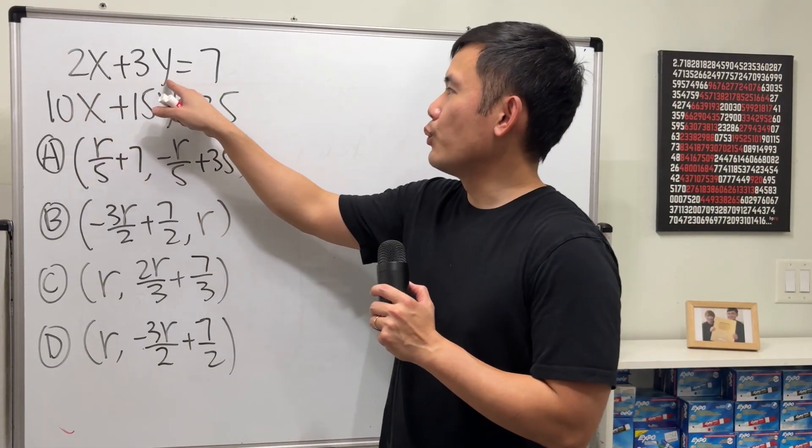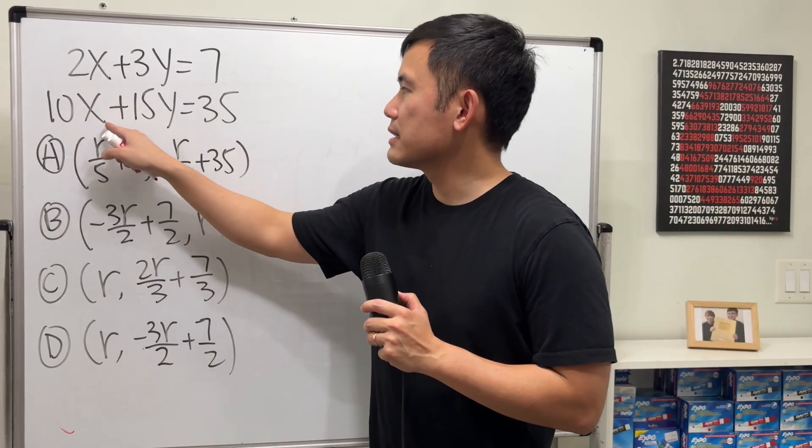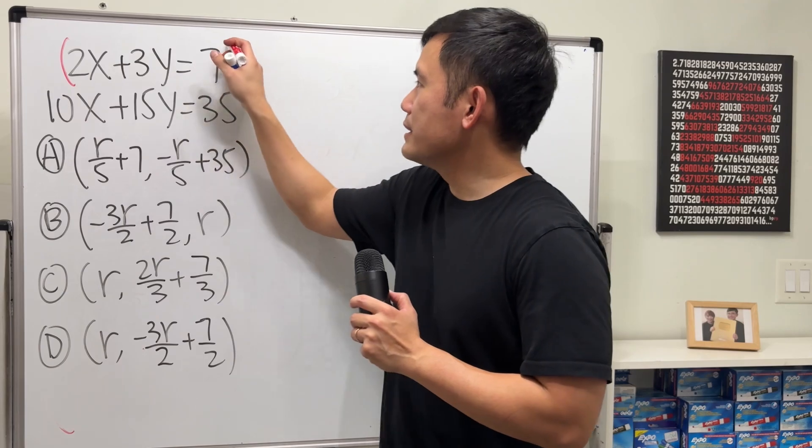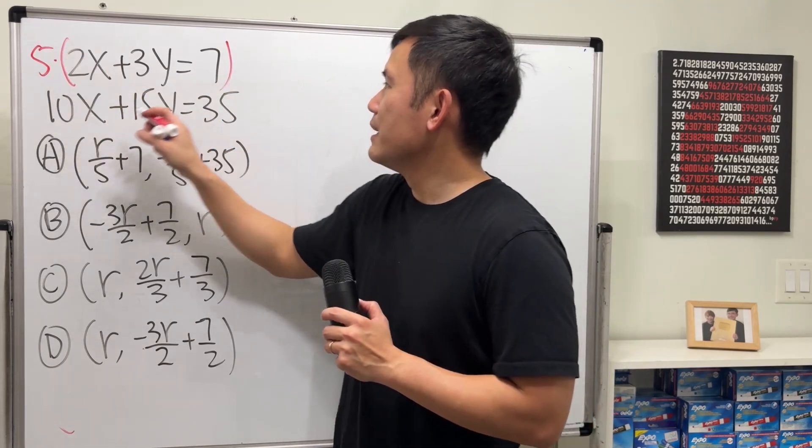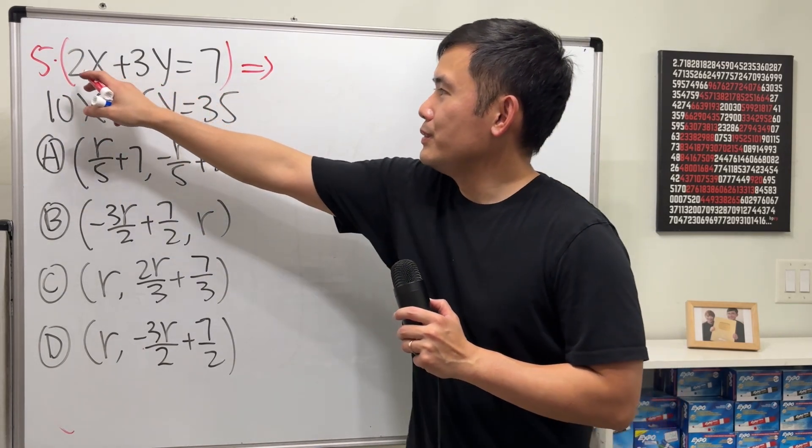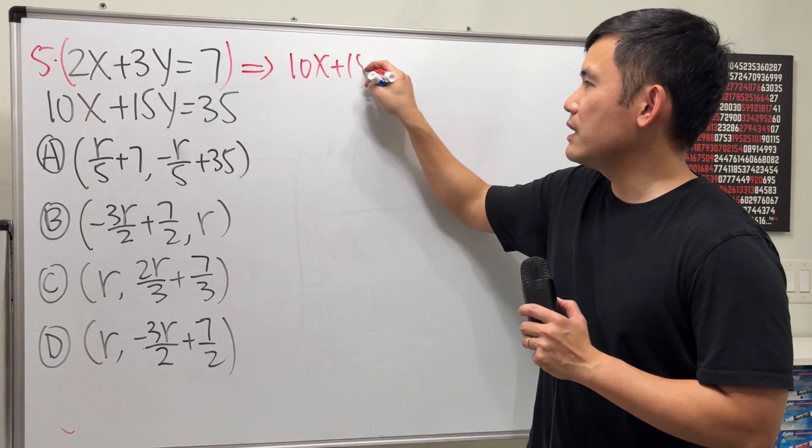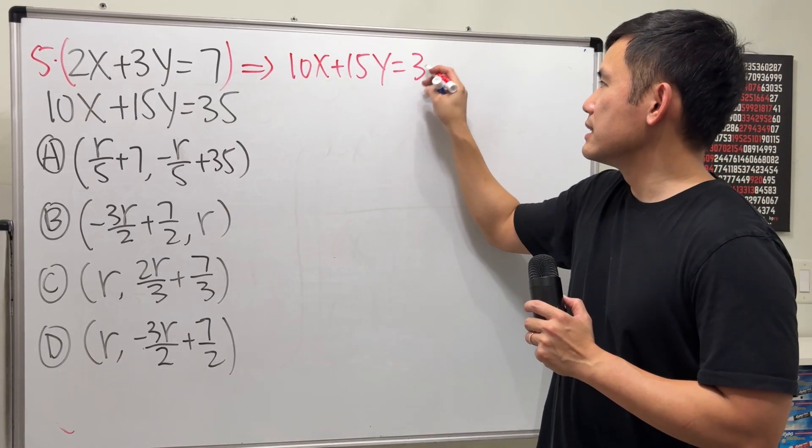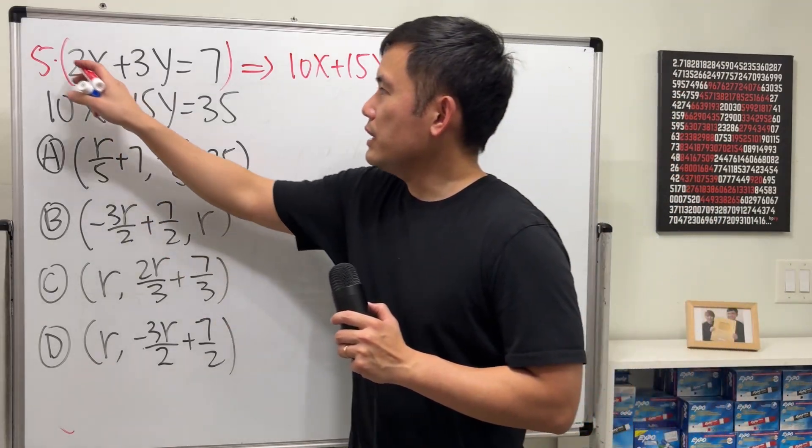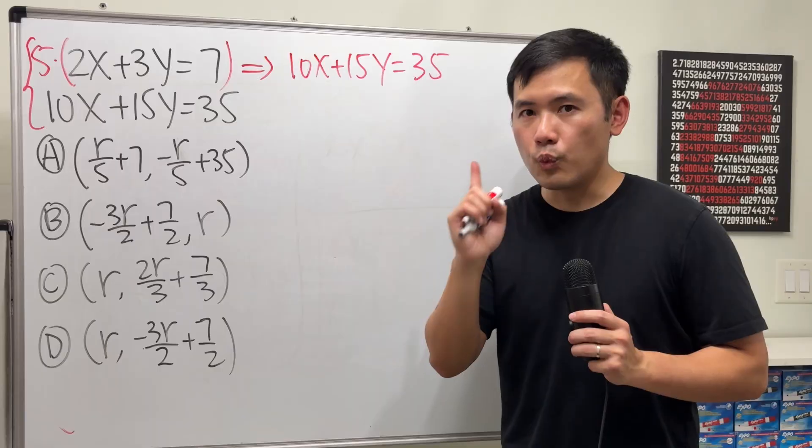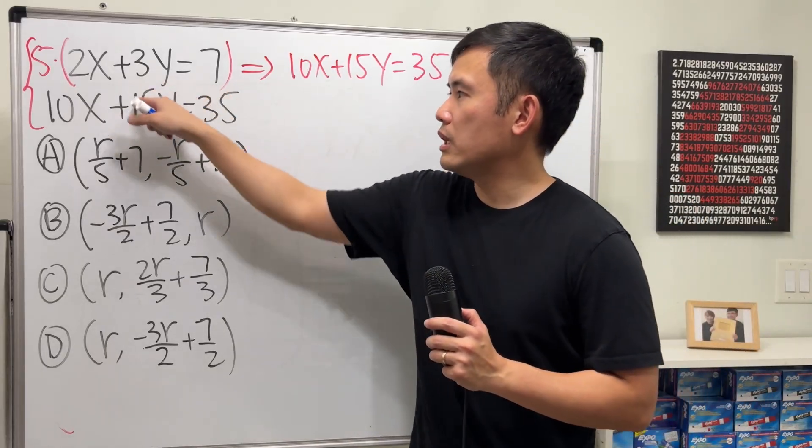2x plus 3y is equal to 7, and the other one is 10x plus 15y is equal to 35. If you multiply the first equation by 5, this gives you the second equation. So 10x plus 15y is precisely 35. So if you look at the original system of equations, it's really just talking about one line, which is just any one of these.